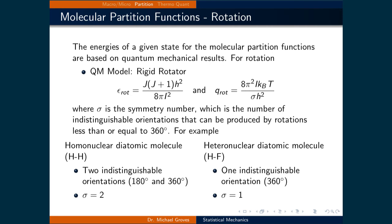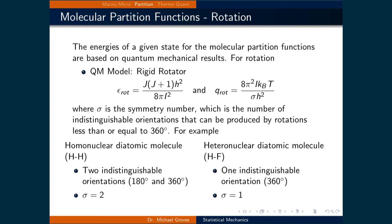The second type is rotational motion. The rigid rotator is the model used to derive the energy expression. Substituting this into Q-rot and simplifying gives 8 pi squared times the moment of inertia I times the Boltzmann constant times temperature, divided by sigma times Planck's constant h squared. Sigma is the symmetry number — the number of indistinguishable orientations produced by rotations up to 360 degrees — included so we do not overcount identical states. For a homonuclear diatomic like hydrogen, sigma equals 2; for a heteronuclear diatomic like HF, sigma equals 1.